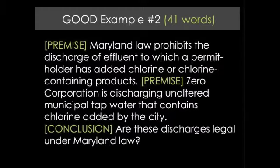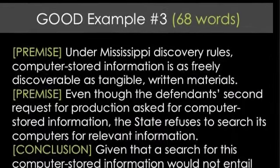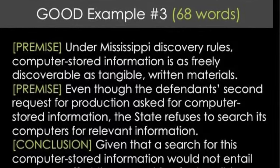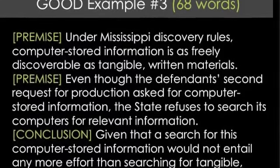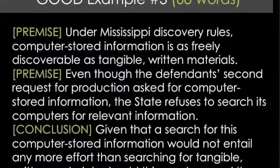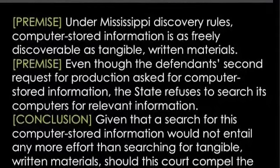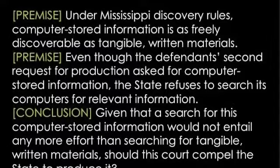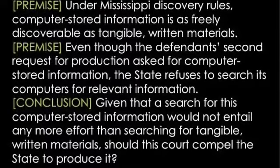In this example, the major premise helpfully reminds the judge of a particular law. The minor premise introduces facts tying into that law. And the conclusion phrases a question the judges need to answer. Good example number three: 'Under Mississippi discovery rules, computer-stored information is as freely discoverable as tangible written materials. Even though the defendant's second request for production asked for computer-stored information, the state refuses to search its computers for relevant information. Given that a search for this computer-stored information would not entail any more effort than searching for tangible written materials, should this court compel the state to produce it?'